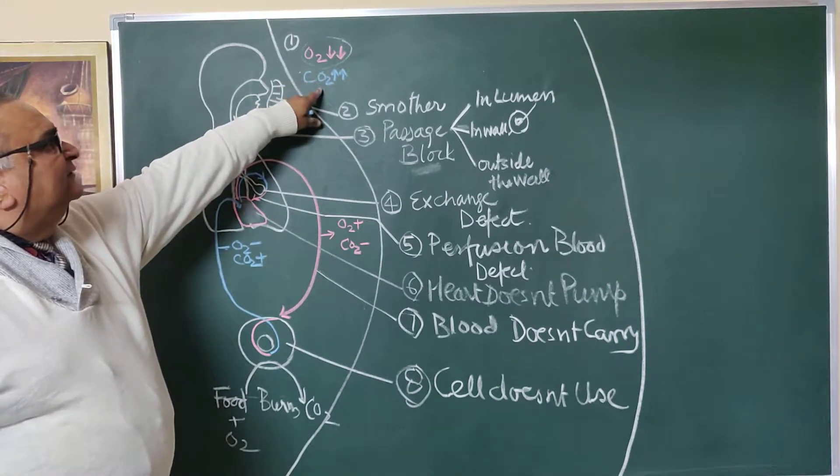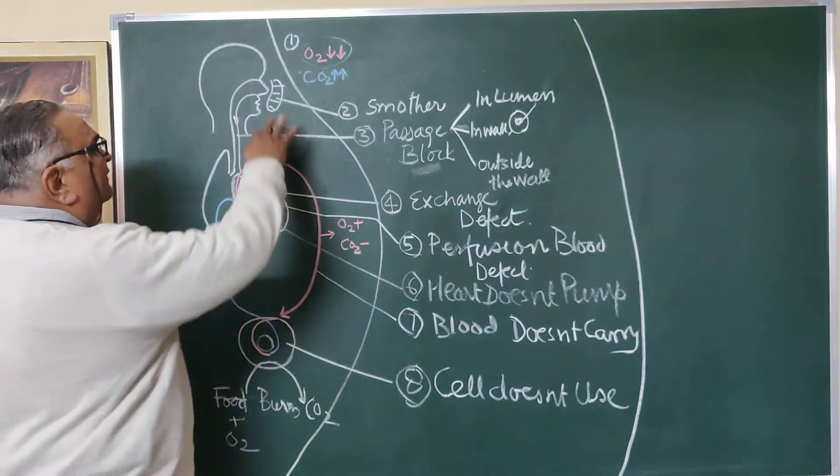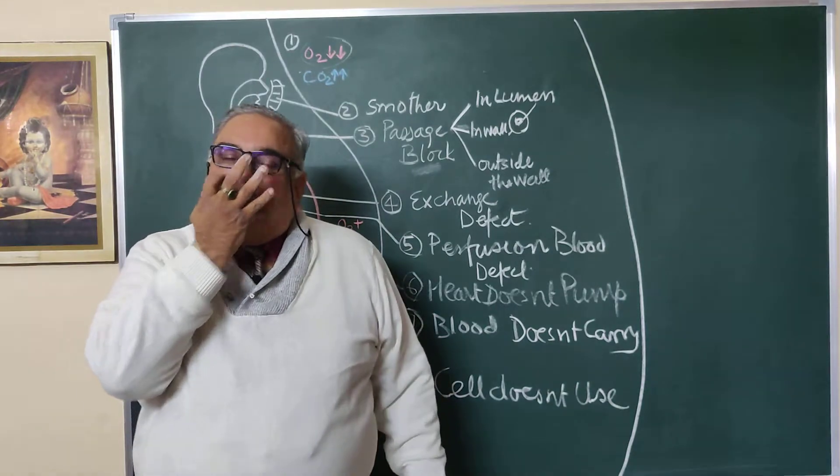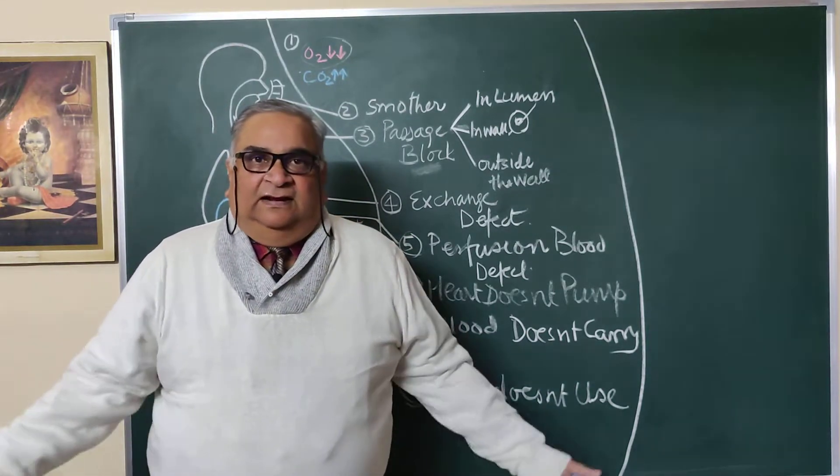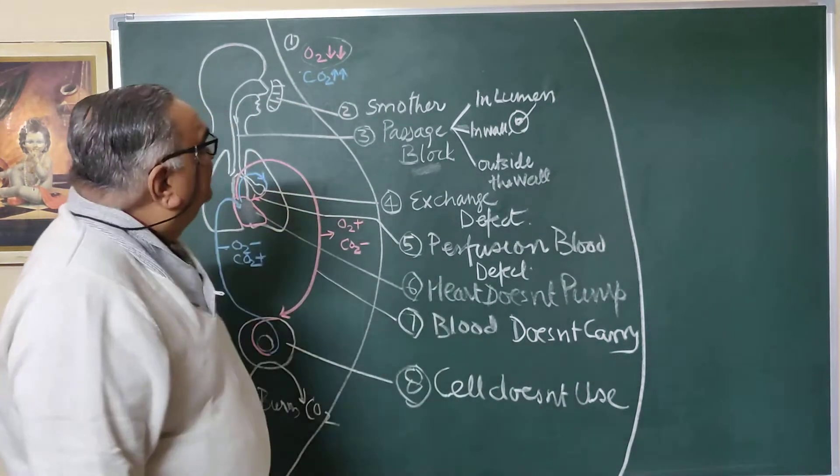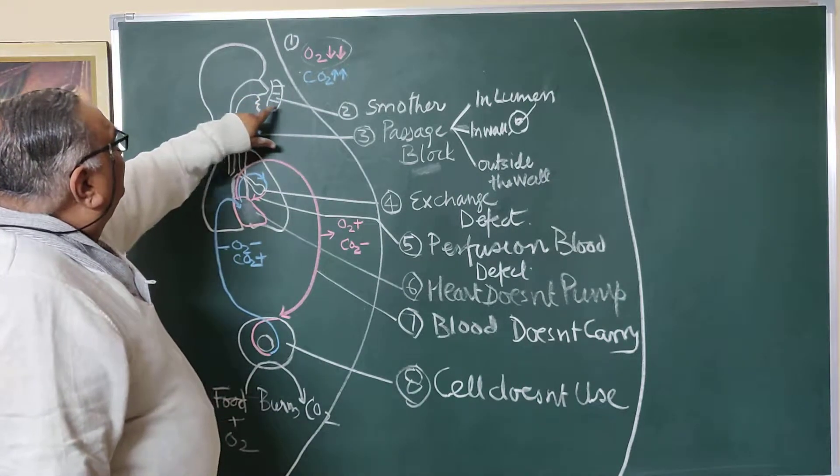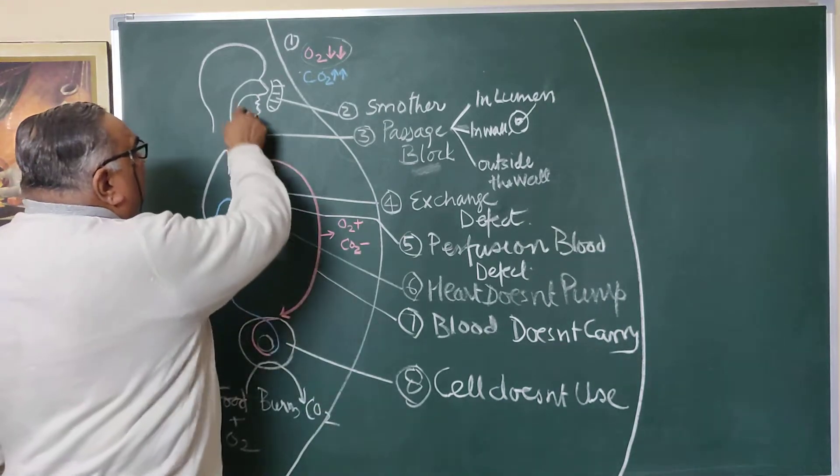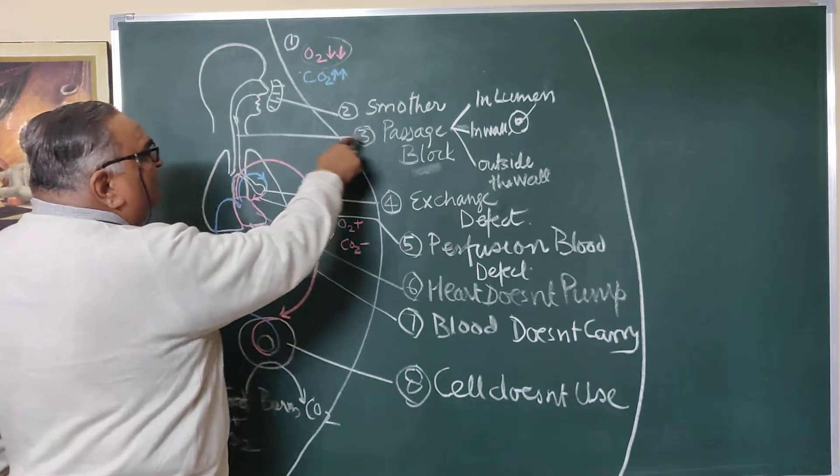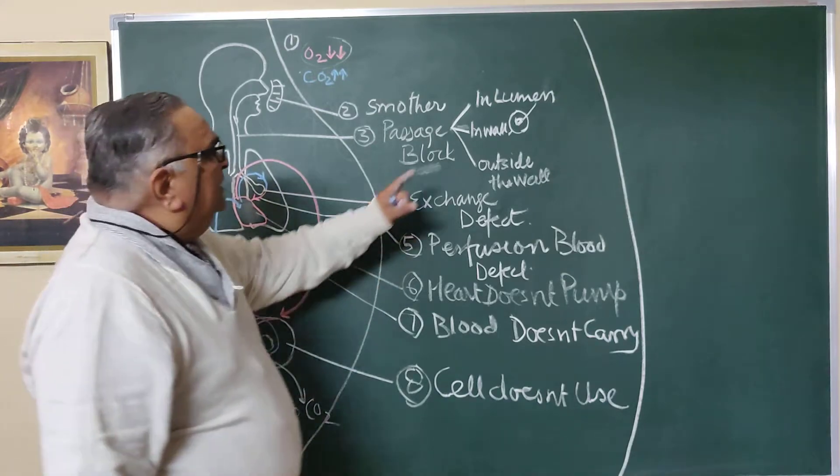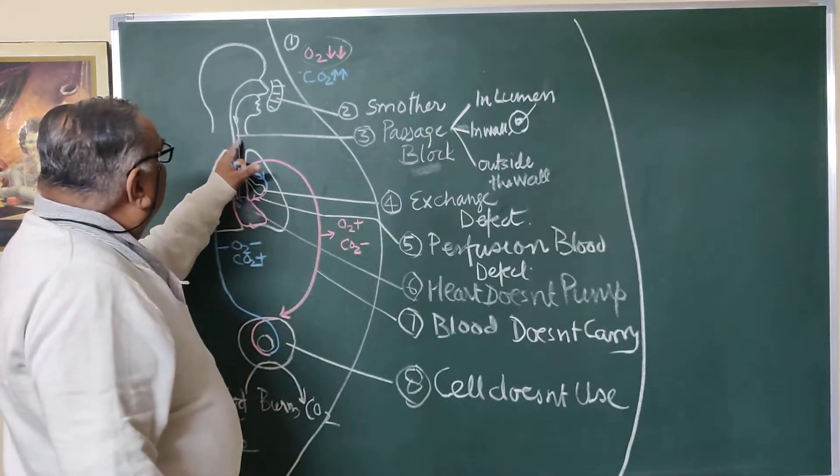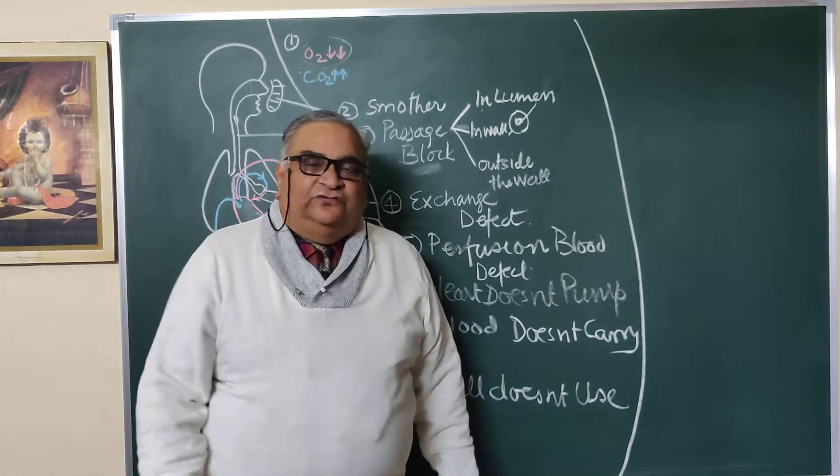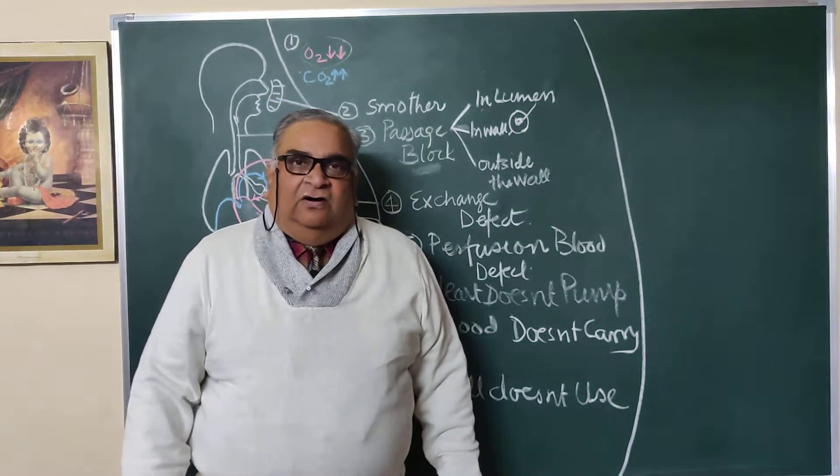The problem is first in the atmosphere. Then somebody may have smothered the person - put a pillow on the mouth and the nose. The third thing can be that these passages are blocked. The block can be in the lumen, in the wall, or outside the wall. In the lumen, you may aspirate food or water.